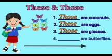Number four, dash are butterflies. Children, are the butterflies far from me? No, it's near to me, right? So what shall we use now? Very good. These are butterflies.